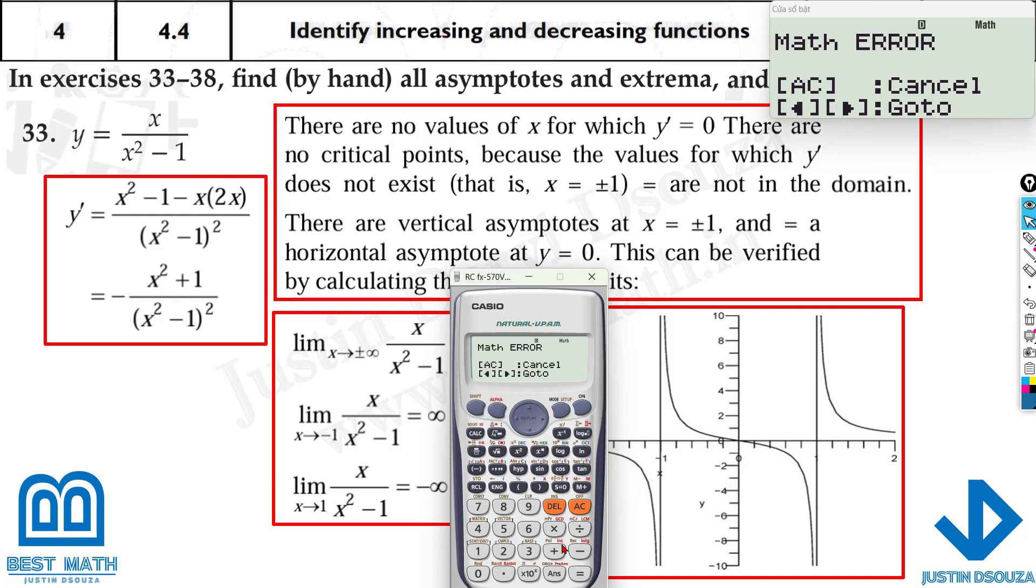It's math error, and even for negative 1 it'll be math error because those are the asymptote points. Similarly, you can choose any other points and figure out which is the correct graph.